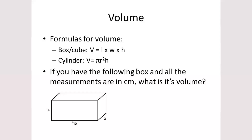The volume is calculated by multiplying 4 times 10 times 3, which gives 120 cubic centimeters. However, all the numbers have only one significant figure, so you cannot report 120 — that has two significant figures. The closest number with one significant figure to 120 is 100. So the answer is 100 cubic centimeters.